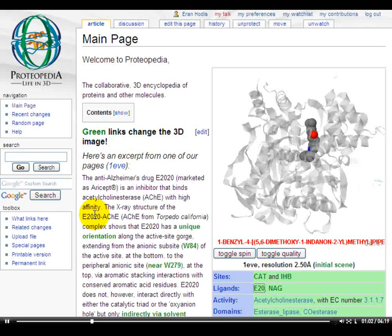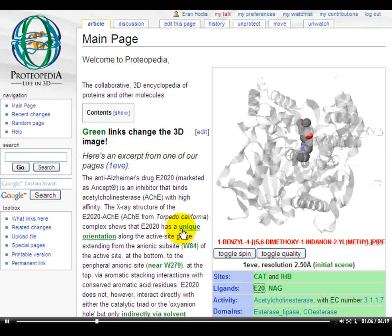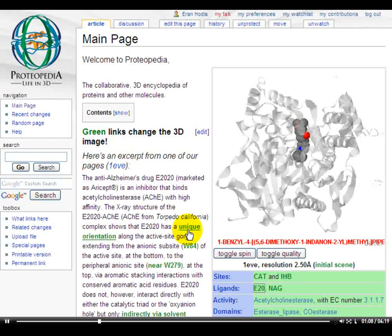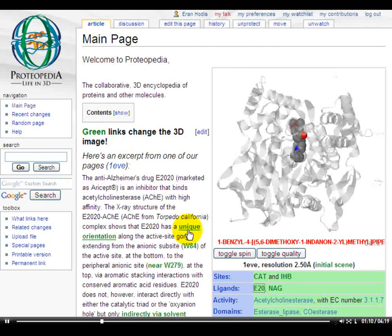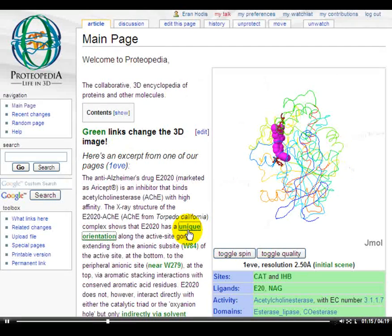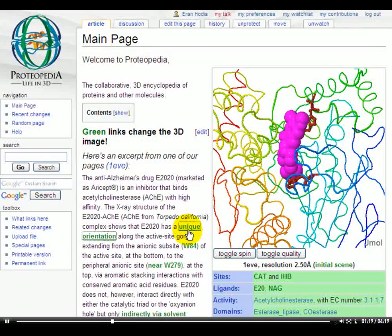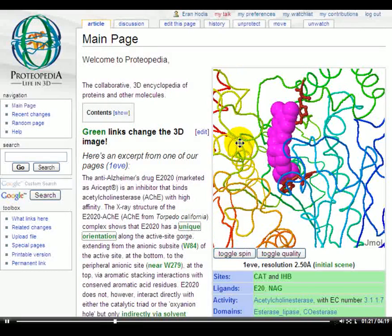The X-ray structure of this complex shows that E2020 has a unique orientation along the active site gorge. When we reach the green link 'unique orientation' and click on it, this elicits a change in the three-dimensional structure that shows us the unique orientation the author is referring to, and we can interact with the structure.